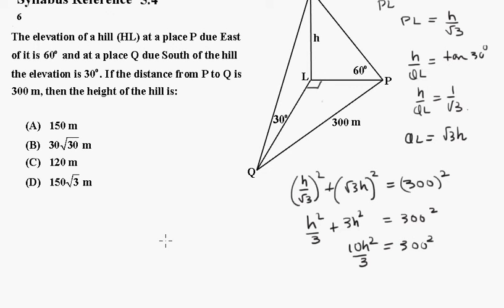And of course that means that H squared must be equal to 300 all squared times 3 on 10.